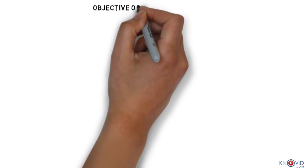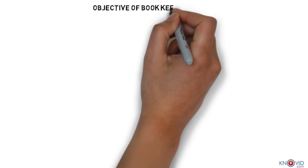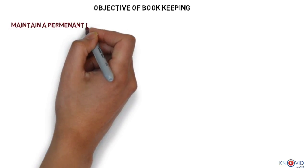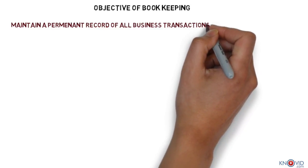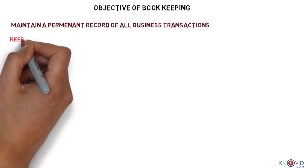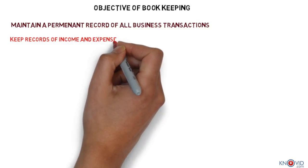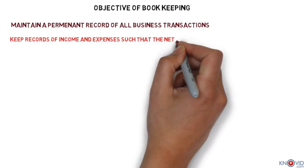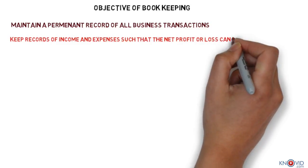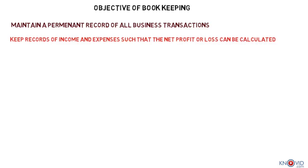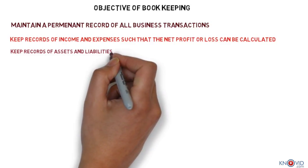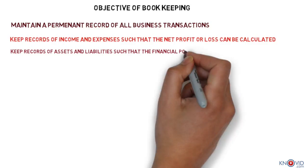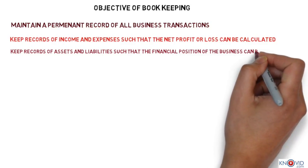So, if we extrapolate, with proper bookkeeping we can: 1. Maintain a permanent record of all business transactions. 2. Keep records of income and expenses in such a way that the net profit or net loss can be calculated. 3. Keep records of assets and liabilities in such a way that the financial position of the business can be ascertained.